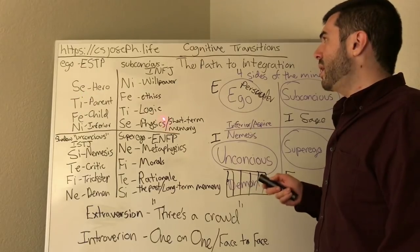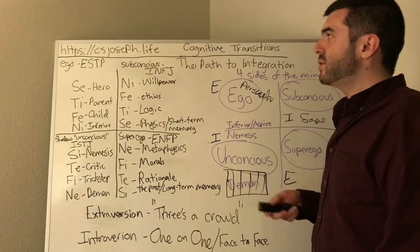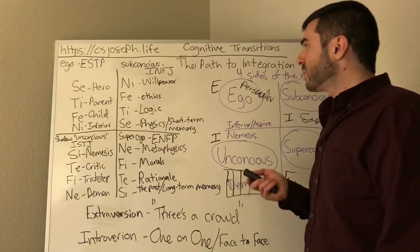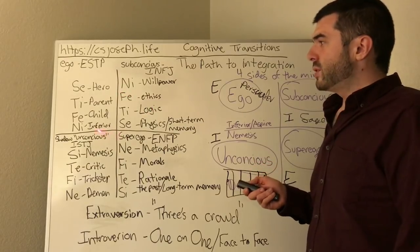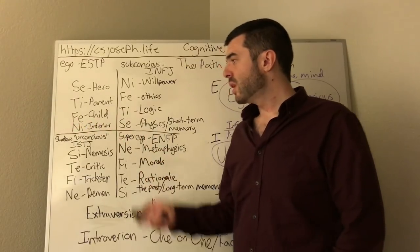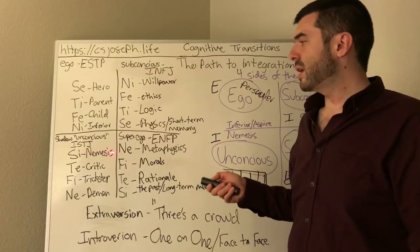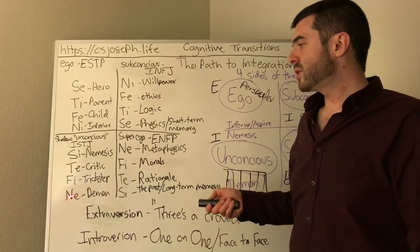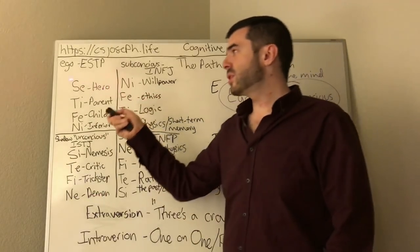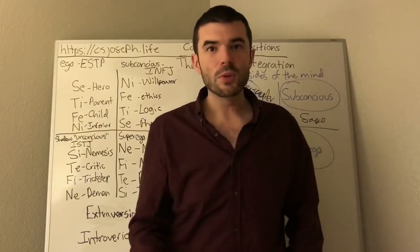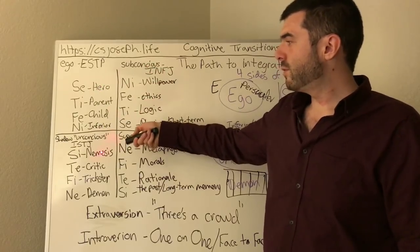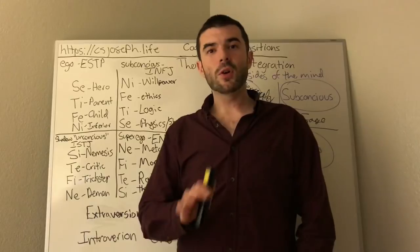We have the ESTP here as an example. They have their ego, their INFJ subconscious, their ISTJ unconscious, and their ENFP superego. It really goes down to gateways. The gateway functions are the fourth function (inferior/aspirational), the fifth function (nemesis), and the eighth function (demon). These are the gateway functions.